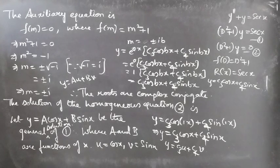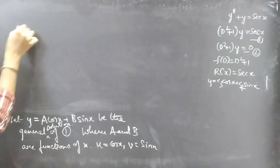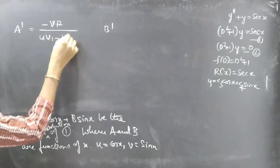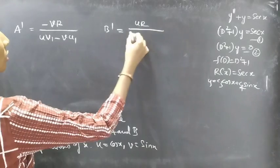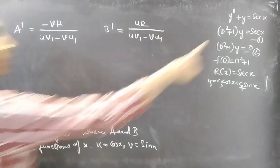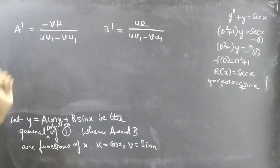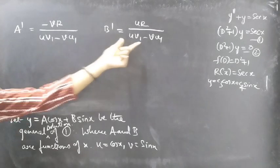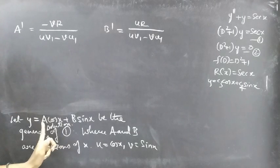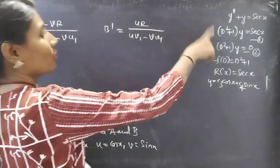So we have u = cos(x) and v = sin(x). In the variation of parameters method, we find a and b using the formulas: a' = −vR / (uv₁ − vu₁) and b' = uR / (uv₁ − vu₁), where R = sec(x). First, we will compute the denominator uv₁ − vu₁ since it appears in both formulas, and then find a and b by integration.